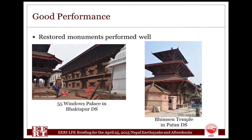Now let's see some of the good performing examples as well. Most of the restored monuments performed well, though some suffered damages. The 55-windowed palace in Bhaktapur Darbar Square was restored earlier and it performed very well — it did not collapse. Similarly, the Bhimsan temple in Patan Darbar Square was also repaired, and only slight damage was seen there, but the structure was intact. They performed well in this earthquake, and there are several other examples of restored monuments which performed very well.